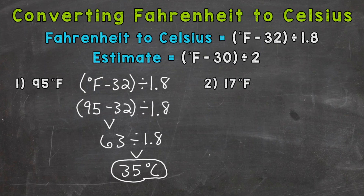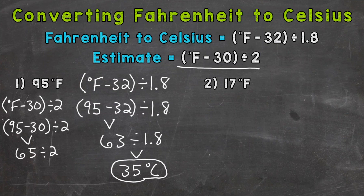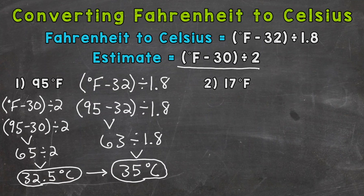Now for the estimation, we use this formula here. This estimation formula is meant to make the conversion quicker to give us an approximate value. We rounded 32 to 30 and rounded 1 and 8 tenths to the nearest whole number, 2. The estimation formula is: degrees Fahrenheit minus 30, divided by 2. Plugging in 95: 95 minus 30 is 65, and 65 divided by 2 gives us 32.5 degrees Celsius. You can see it's a pretty close approximate to the exact conversion.